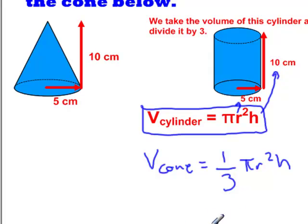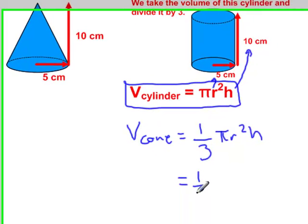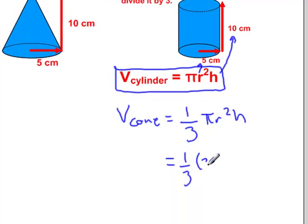Let's substitute some of these numbers in. For π, we always use the number 3.14. The radius of our cone is 5 centimeters. We have to square that value, because it's called for in the formula. And then we multiply by the height of 10 centimeters.